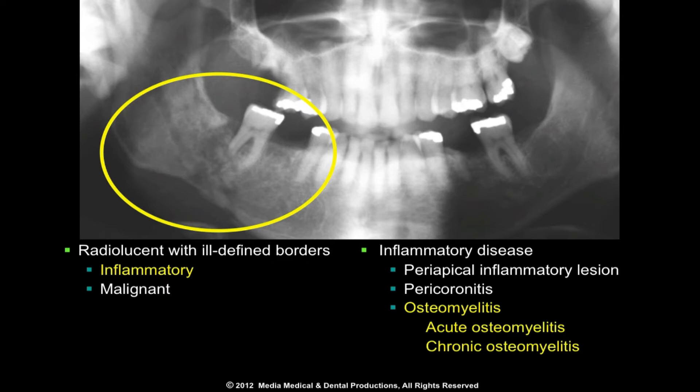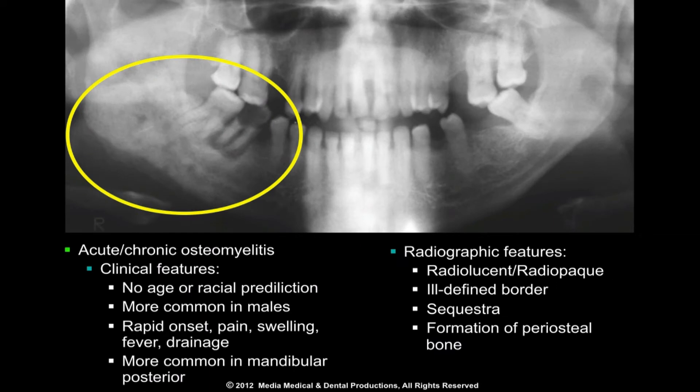There is no difference in the process of bone's response to inflammation. Osteomyelitis may affect patients of all ages. There is a predilection for males and it is more commonly found in the mandibular posterior. Typical signs and symptoms of acute osteomyelitis may include rapid onset, pain, swelling, fever, lymphadenopathy, and leukocytosis.